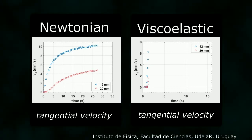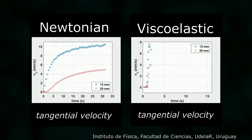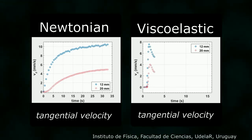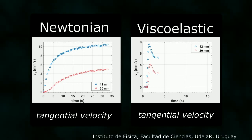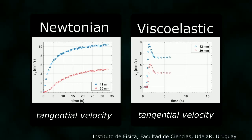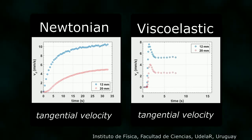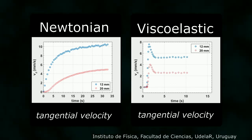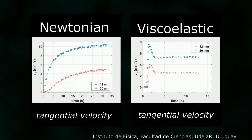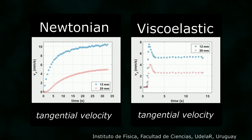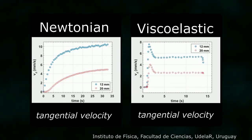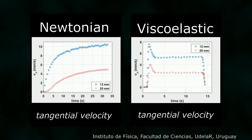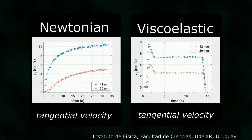For the viscoelastic fluid, the velocity plot looks very different. We get a maximum velocity that then decreases to a steady value. Then we have a negative value when the inner cylinder stops rotating. This is due to the elastic effects of the fluid.